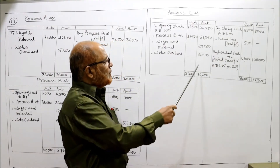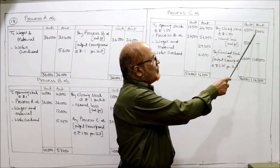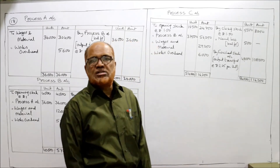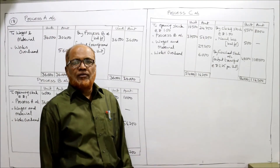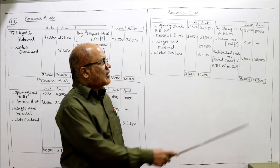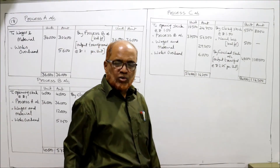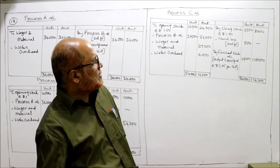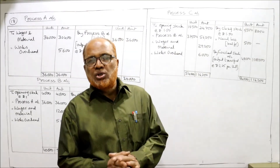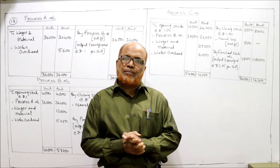Debit side total 1,16,250 minus closing stock 8,250 equals 1,08,000 — that is the value of the output for 48,000 units. So 1,08,000 divided by 48,000 gives 2.25 rupees per unit. That's all — these are the three process accounts. We have now completed all 18 problems on process costing.